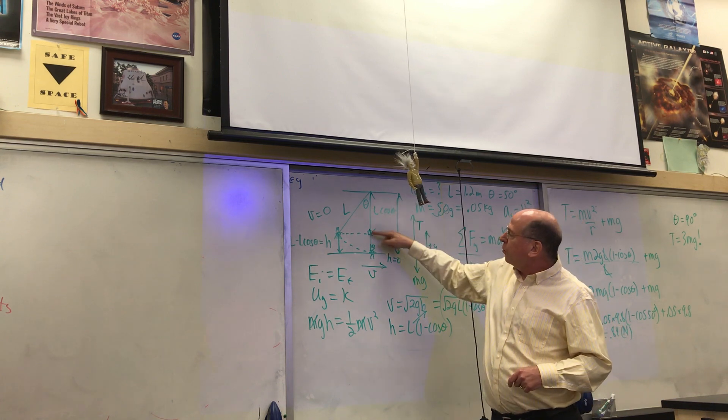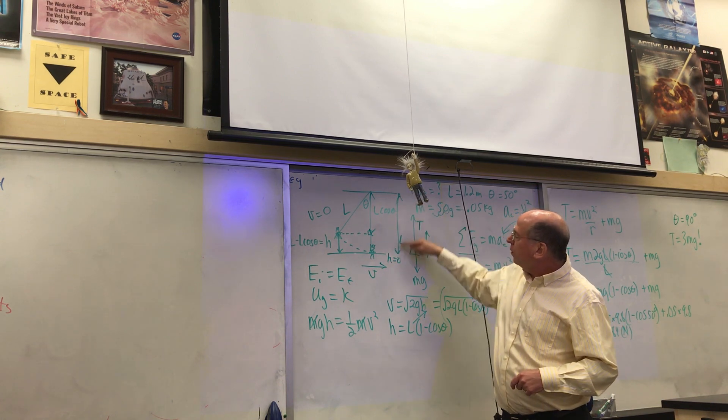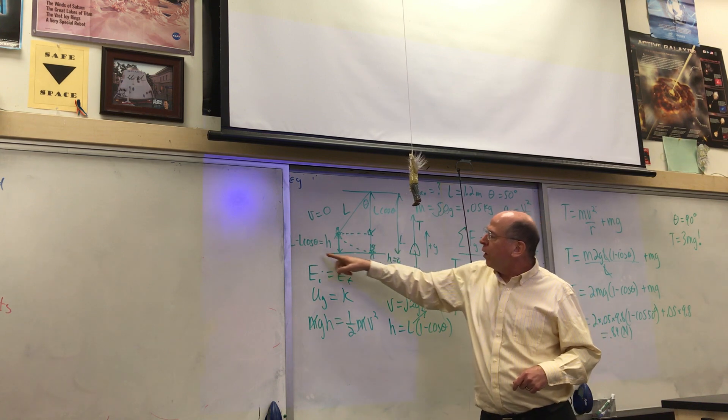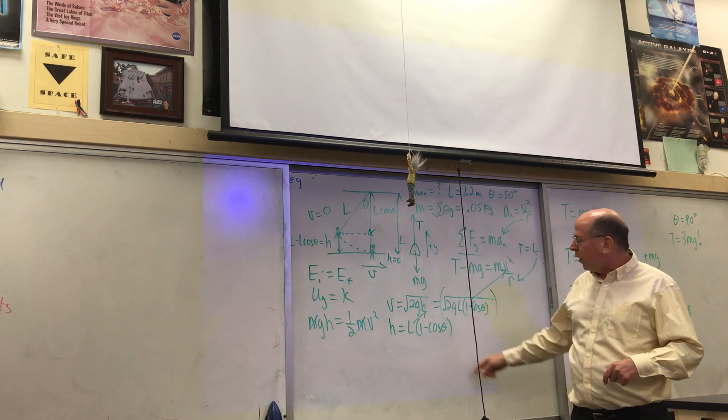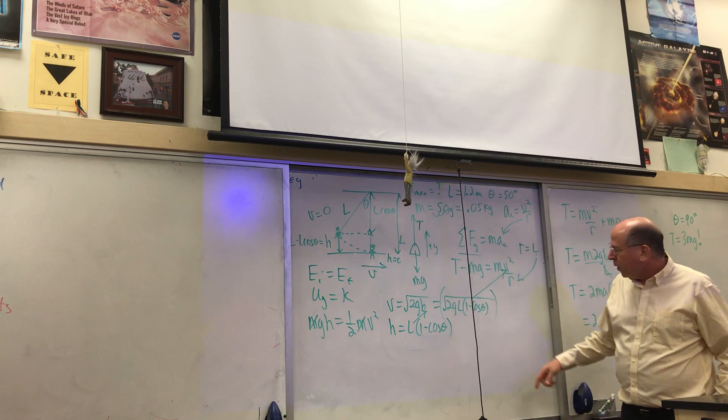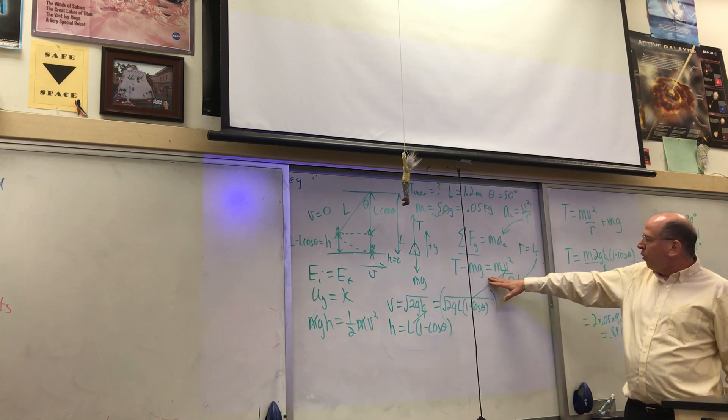We can see that this distance is L cosine theta. This whole distance is L, so the height is L minus L cosine theta, or you could factor the L out.